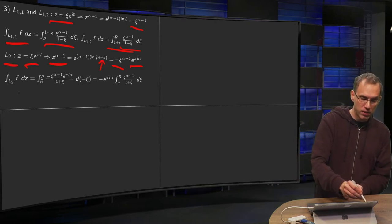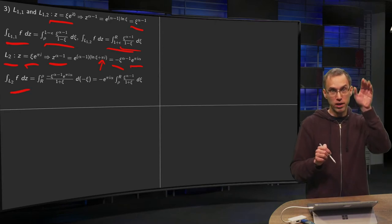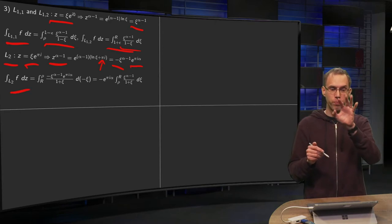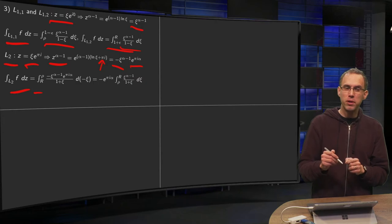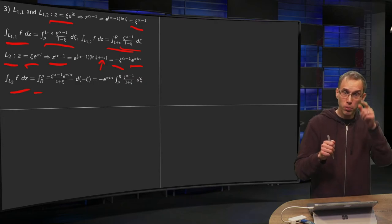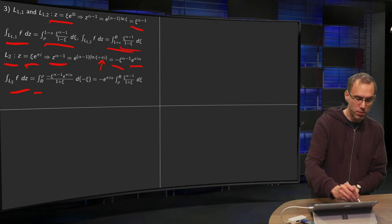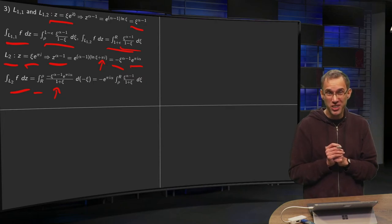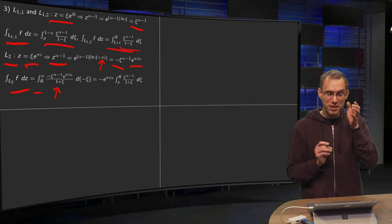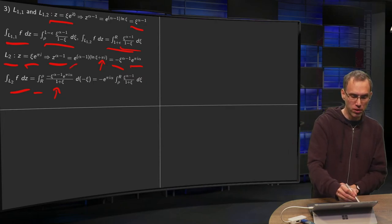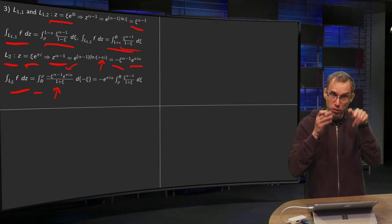However, if you plug it in, your integral along L2, you go from r to rho. Also no problem. But your 1 over 1 minus z, that becomes a 1 over 1 plus psi. So that becomes a different integral. So this part on the numerator is fine, but you get a 1 over 1 plus psi, d minus psi.